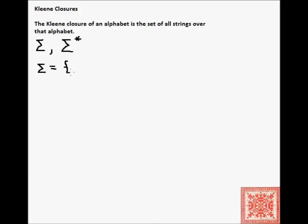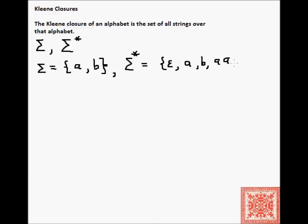Let's do a simple example. Let's say that our alphabet is {a, b}. The Kleene closure of this alphabet will be all of the strings beginning with the empty string over sigma. So strings of length 0, all strings over a's and b's of length 1, of length 2 — b, a, ab, ba, bb — and then all strings of length 3, and so forth. This is clearly an infinite set.